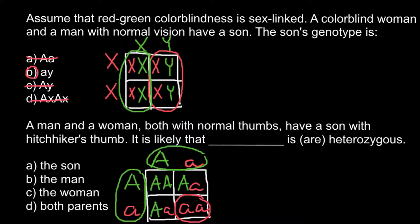So that is the textbook explanation, and the correct answer is that both parents are heterozygous — answer D. But as I said earlier, I want to give you another explanation. Actually, what you are told in the books is not what the real-life situation is.